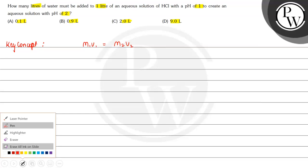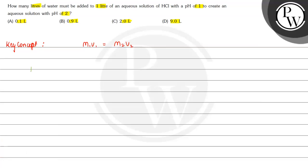So in this case, what is the given data? For pH 1, we have volume as 1 liter, and for pH 2, we have to find out the volume.